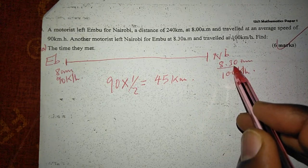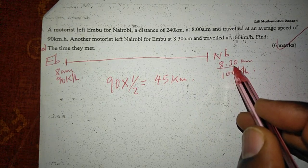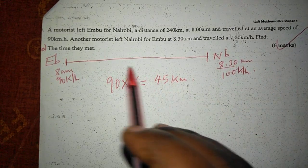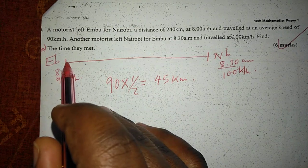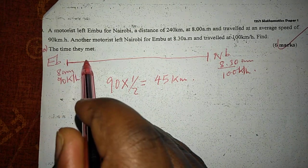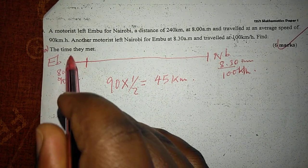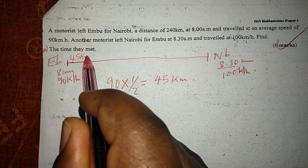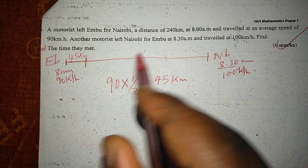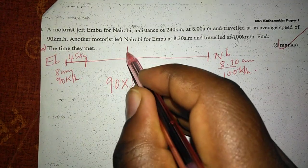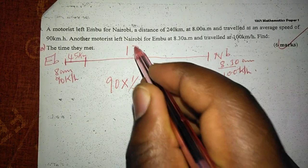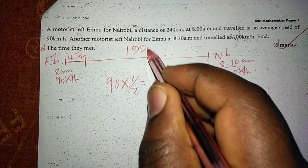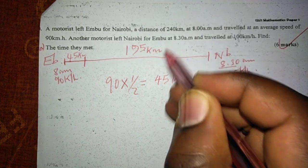Therefore, at 8:30, when the second motorist is starting his journey, the first motorist has already covered 45 kilometers. Therefore, the distance between them is now 195 kilometers.